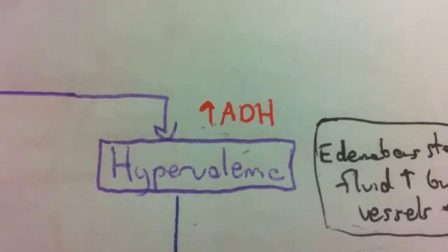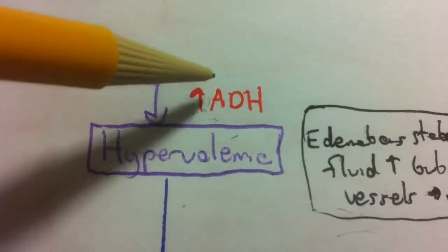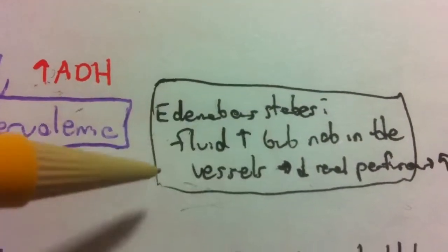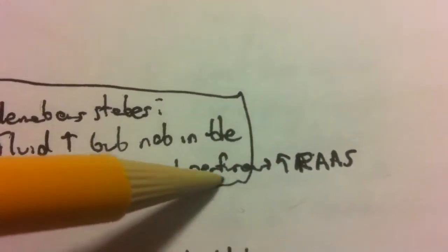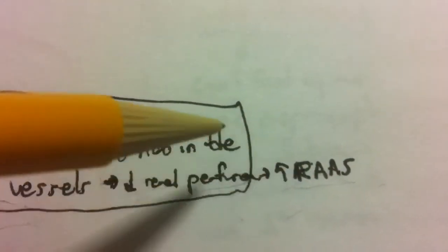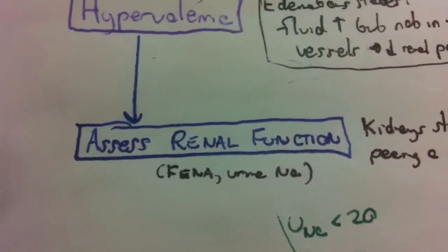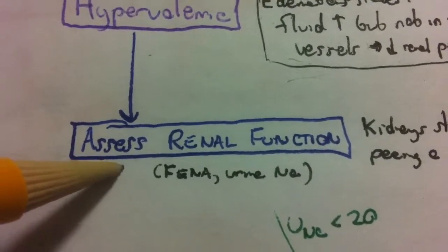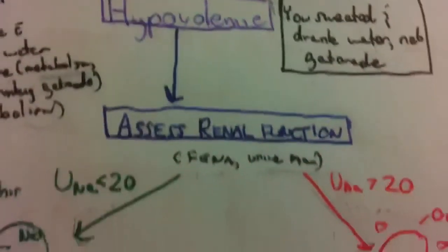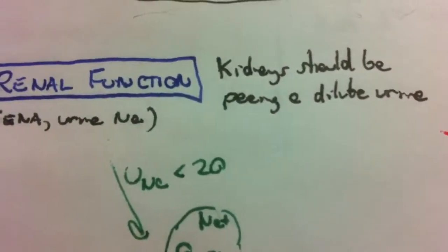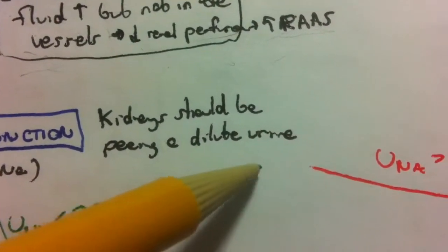So your volume status assessment basically supports, and often your history will also support, that your patient has one of these edematous states. So fluid is increased in the body overall, but it's not in the right place. It's not in the right place. And so renal perfusion is down, renal angiotensin-aldosterone system is up, and as we just mentioned, ADH will be high when you have sympathetic drive. So again, first step after we've determined volume status, assess renal function. You can do that with the pheno, the urine sodium, just like over here in hypovolemic.